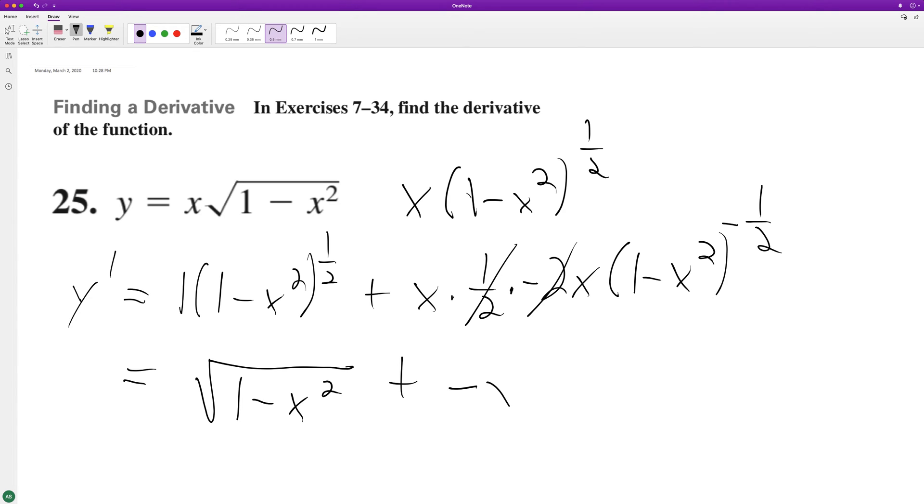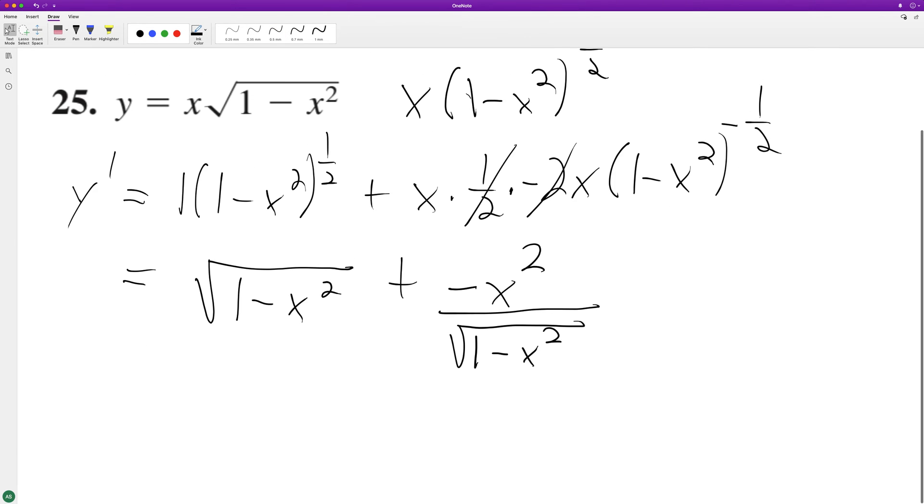Negative x squared. And then on the bottom here, we'll have the square root of 1 minus x squared. And if we want to go crazy, we can do a common denominator, so this becomes 1 minus x squared over the square root of 1 minus x squared.